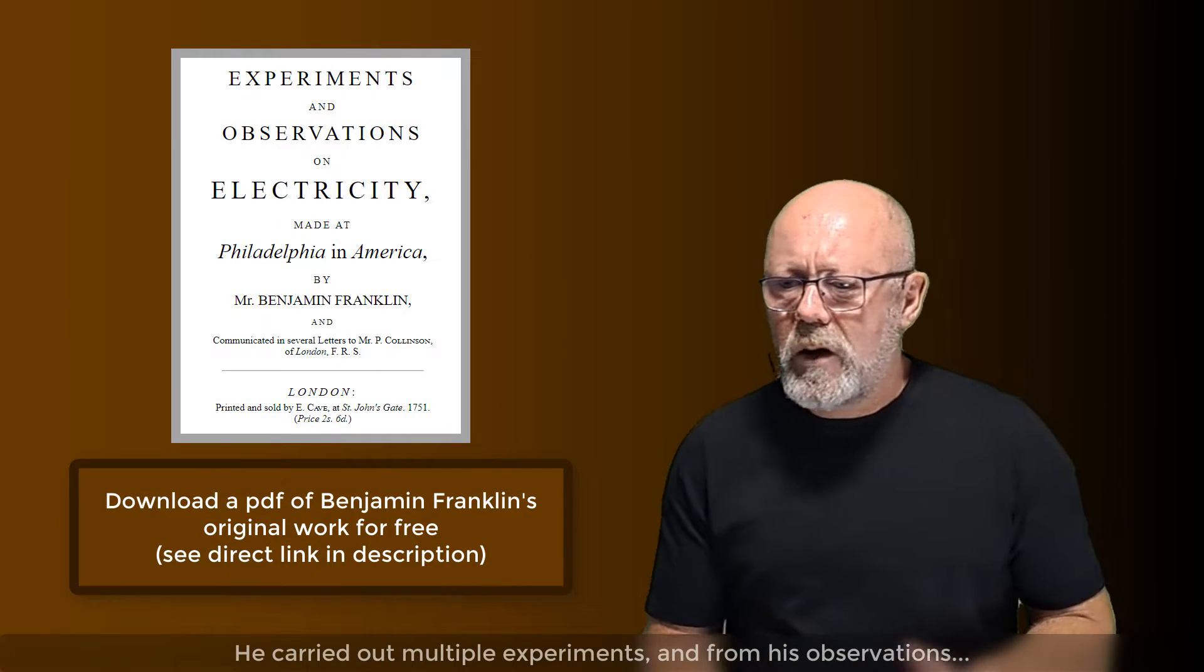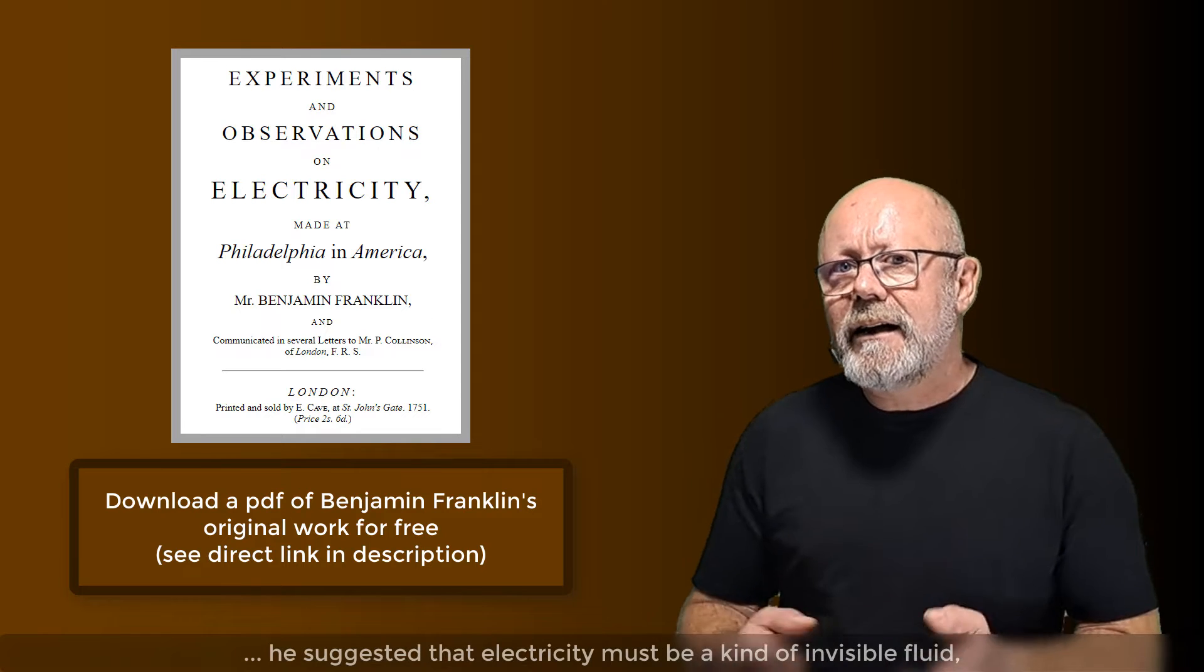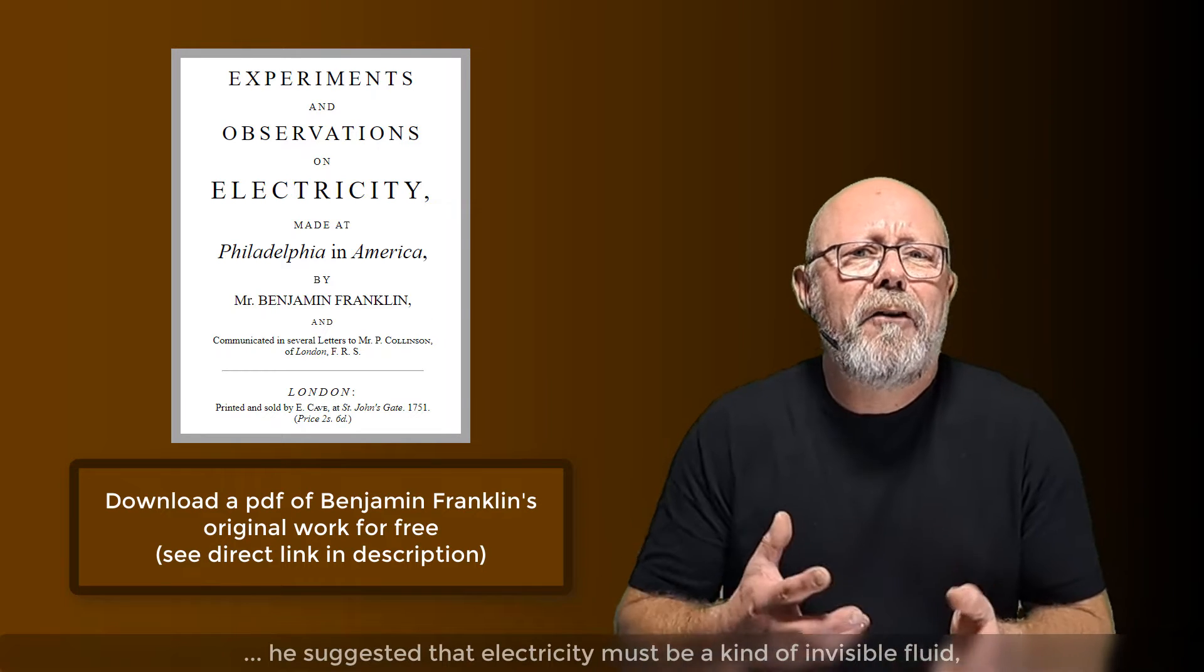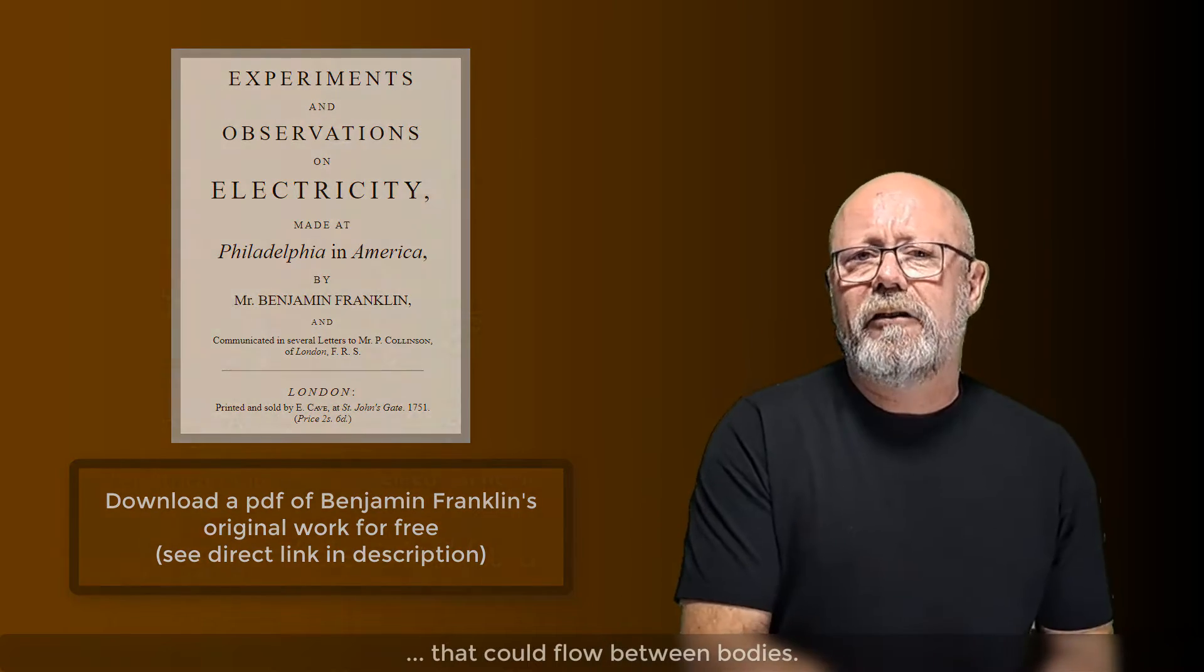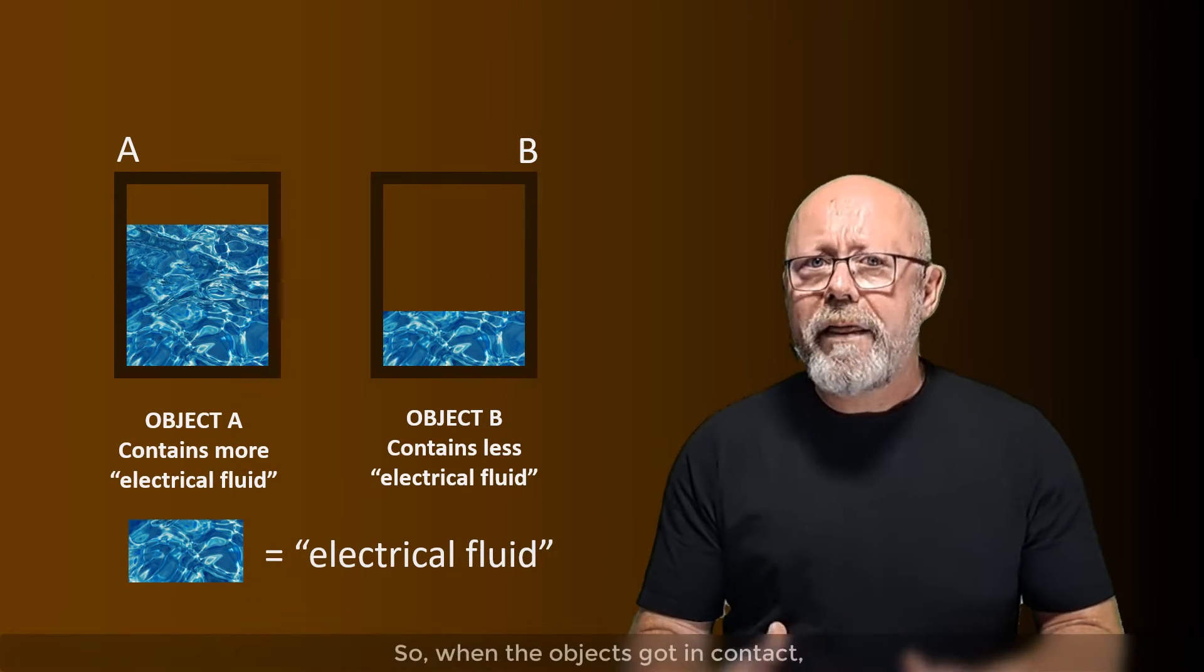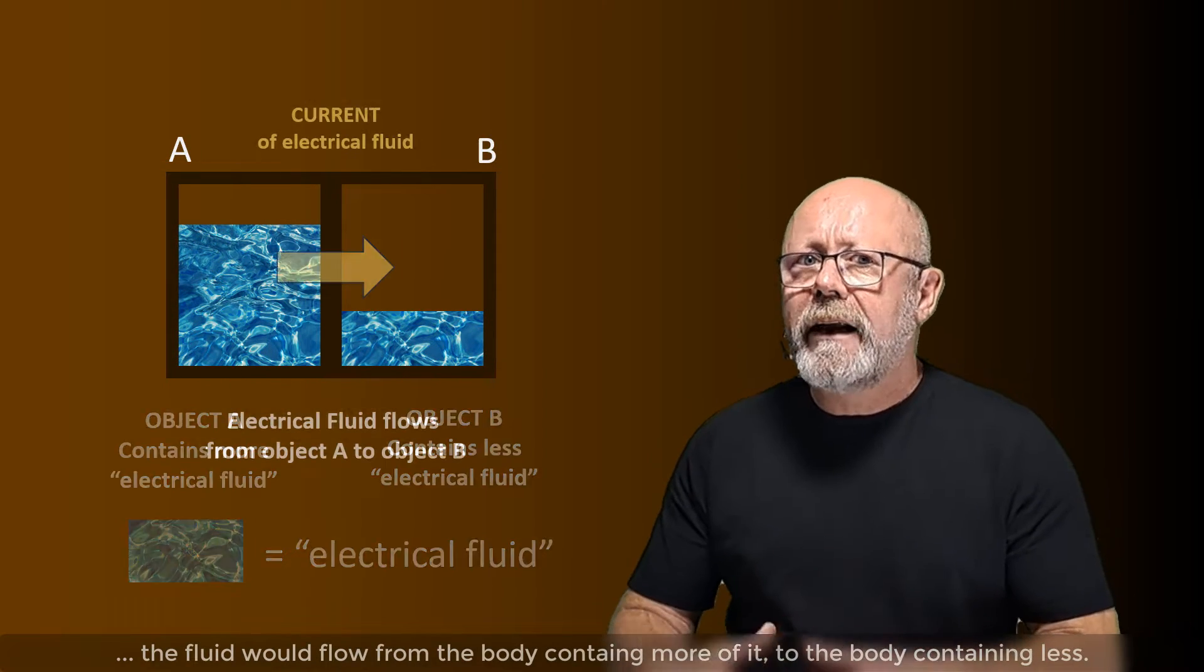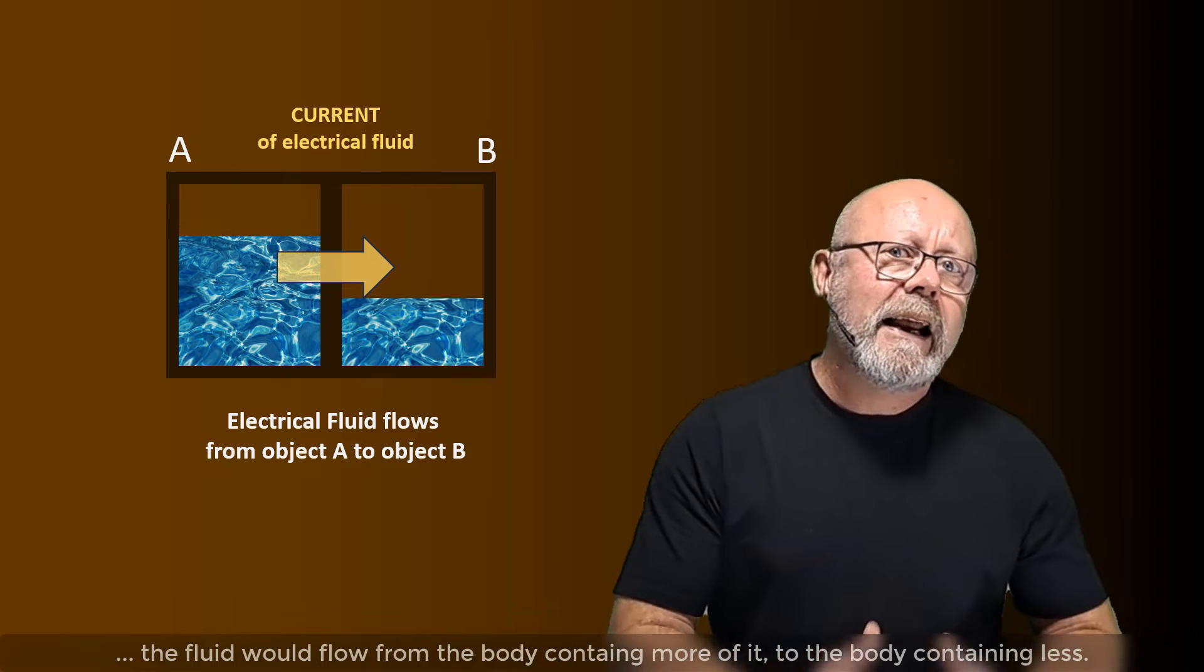He carried out multiple experiments and, from his observations, he suggested that electricity must be a kind of invisible fluid that could flow between bodies. Some objects containing more of that fluid than others. So, when the objects got in contact, the fluid would flow from the body containing more of it to the body containing less.